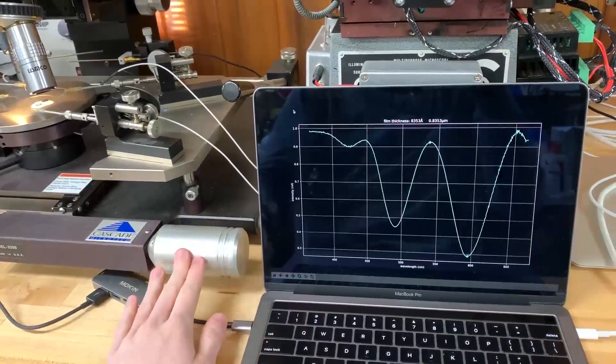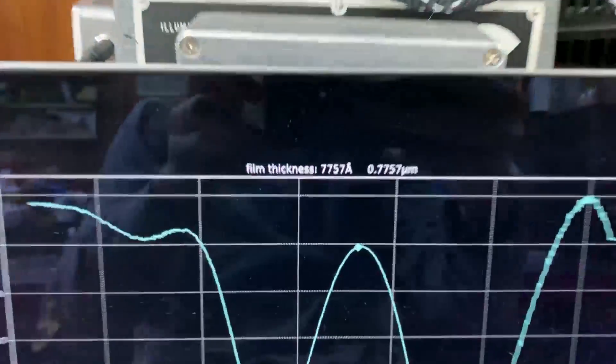So I'm here on the home chip fab and I want to show you a pretty simple way to measure the thickness of thin films that are on the order of a few nanometers to a few microns using only an optical spectrometer that I picked up off eBay like everything else here and a white light source.